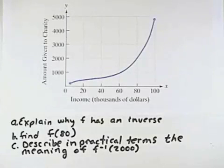A function f models the amount given to charity as a function of income. The graph of f is shown in the figure. Explain why f has an inverse.